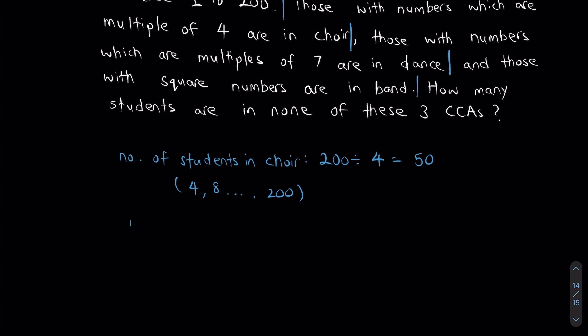Now, let's move on to dance. Number of students in dance. Same thing, I'm going to take 200 divided by 7 this time. I'm actually going to get a remainder. I'm going to be getting 28, remainder 4. Which means, there's only going to be 28 students in dance. So, as you can imagine, it will be 7, 14, all the way until 196. The remainder 4 is the 4 extra students that wouldn't be, right? 197, 198, 199, and 200. They won't be in dance. That's why we have a remainder 4.